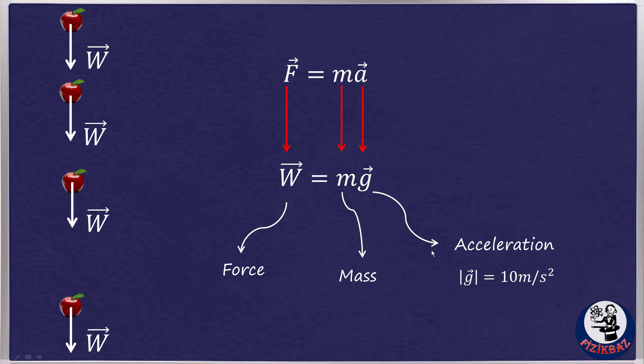To calculate an object's weight from its mass m, we multiply by 10, the value of acceleration of free fall g.